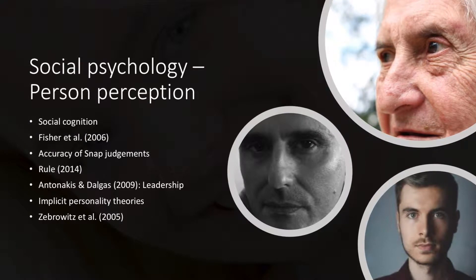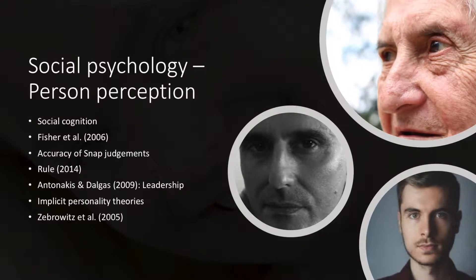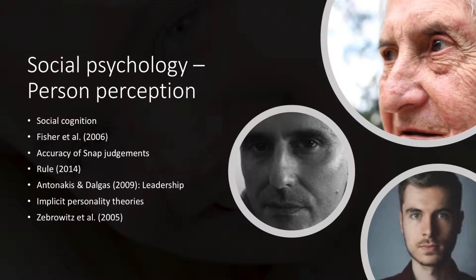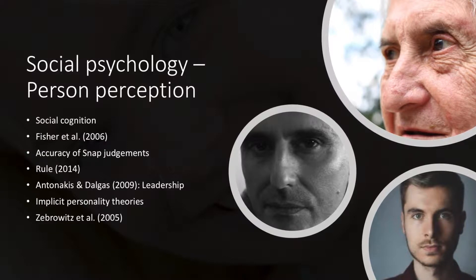Regarding leadership, Antonakis and Dalgas in 2009 found that children were just as accurate as adults in judging the competency, intelligence, and leadership of individuals. They found that Swiss children favored Obama before they even knew who he was, simply by looking at a picture.